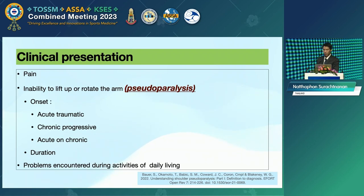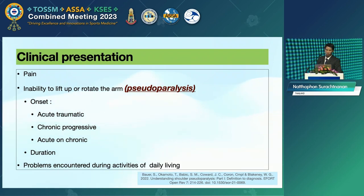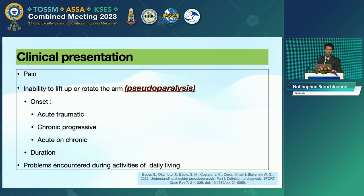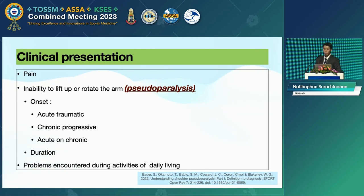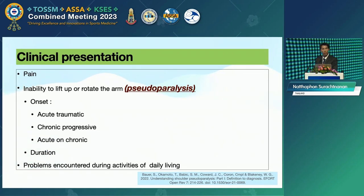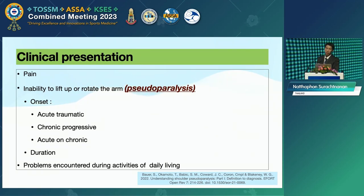The clinical presentation of the massive rotator cuff tears are pain and the inability to lift up or rotate the arm. These are the big problem we call pseudo-paralysis. We need to take history for more information about the onset and the duration of symptoms to classify the massive rotator cuff tear into: acute traumatic, chronic progressive, or acute-on-top problem.